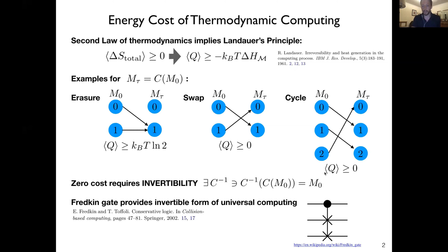One of the main lessons of Landauer's bound is that zero cost requires invertibility — there must be some way to reverse the computation logically. Fredkin and Toffoli took this to heart in their work on conservative logic, presenting a gate capable of universal computing with no energy cost because of its logical reversibility.